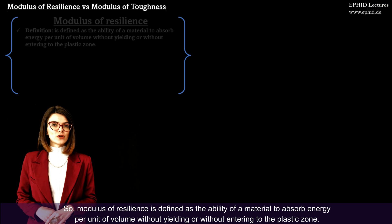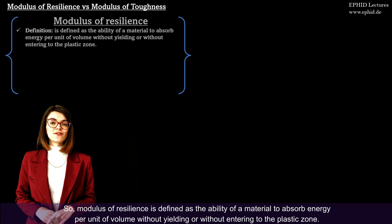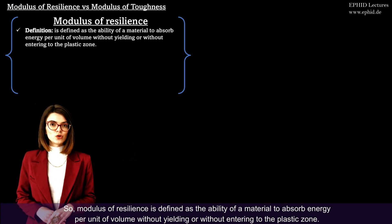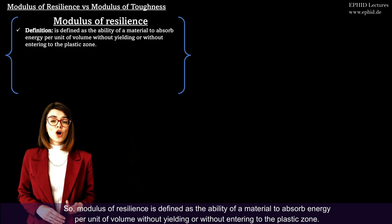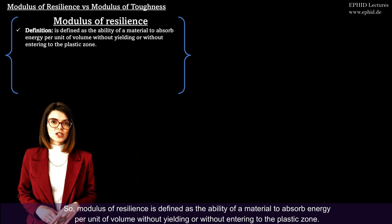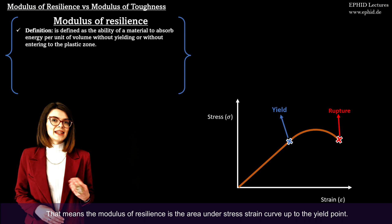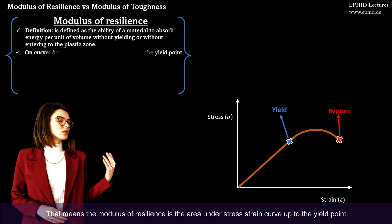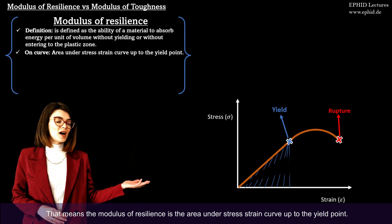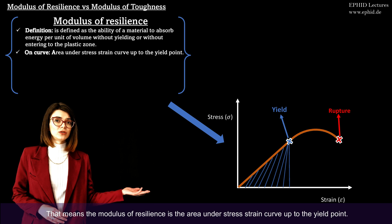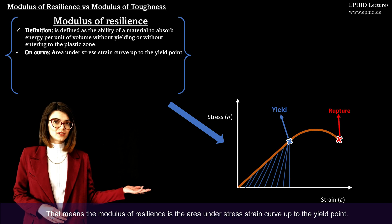Modulus of resilience is defined as the ability of a material to absorb energy per unit of volume without yielding, or without entering the plastic zone. That means the modulus of resilience is the area under the stress-strain curve up to the yield point.